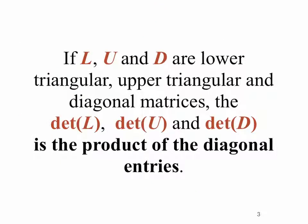If L, U, and D are lower triangular, upper triangular, and diagonal matrices respectively, then the determinant of L, the determinant of U, and the determinant of D are all simply the product of the diagonal entries. Lower triangular, upper triangular, and diagonal matrices all have determinants that are easily found as the product of their diagonal entries.